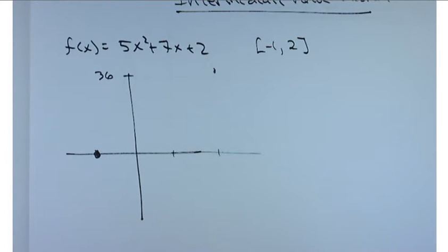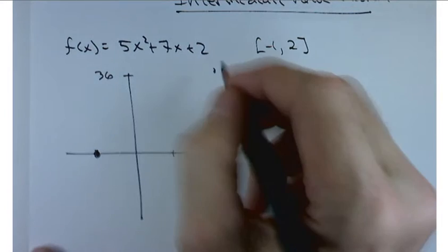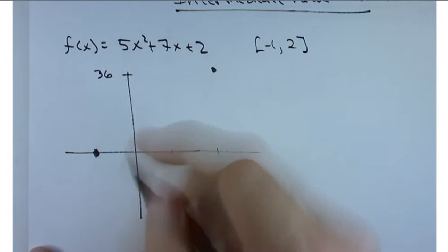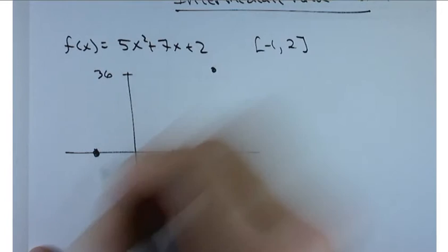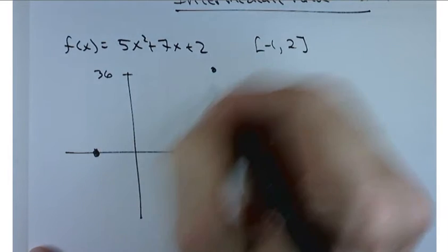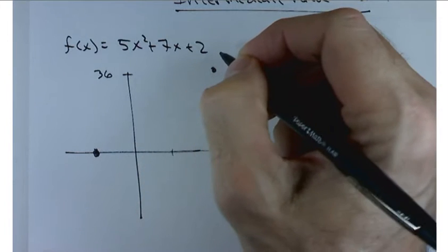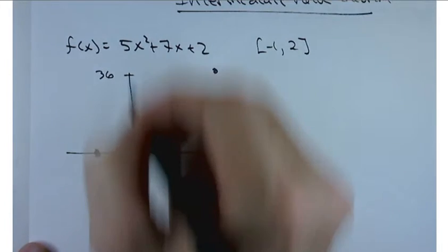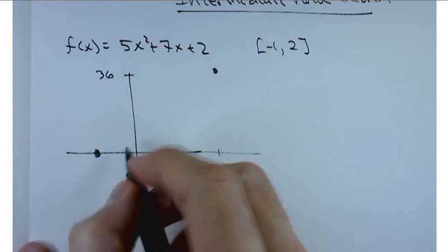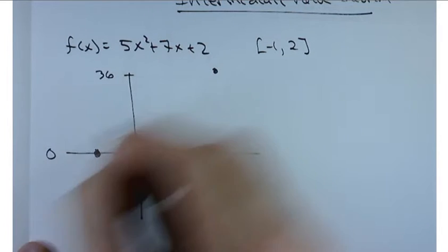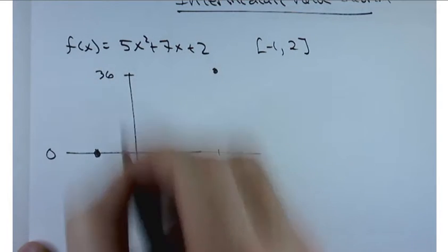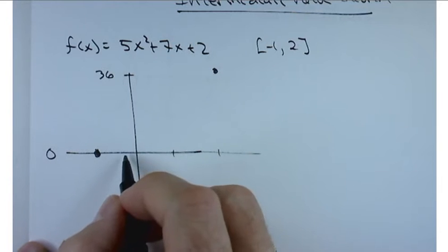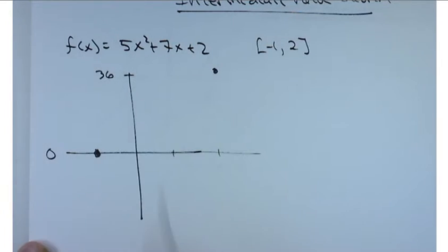Let's understand what the intermediate value theorem says. Since the function itself is a nice continuous function, somehow, it doesn't matter how it gets from here to here. It can get here anyway, as long as it's a continuous function. It has to pass through every value between, say, 0 and 36. Somewhere, there's a value of x that gives me any value of y that you want.